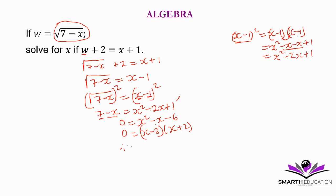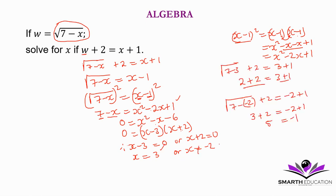Therefore, either x minus 3 equals 0 or x plus 2 equals 0. Then x equals 3 or x equals negative 2. We have to check if our answers are applicable. x equals negative 2 is not applicable.